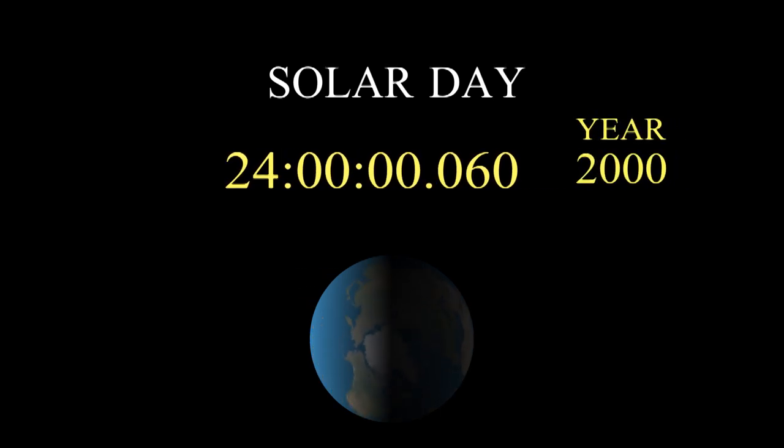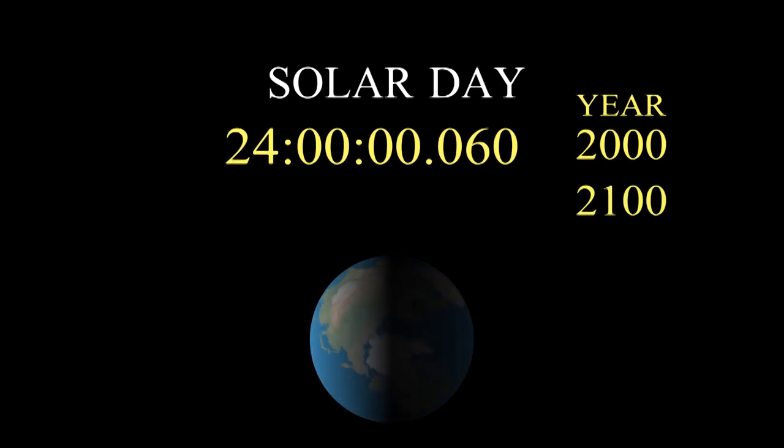Our days have slowly been getting longer because the Earth's rotation is slowing down. It's slowing such that every 100 years, our days get longer by 2 milliseconds.